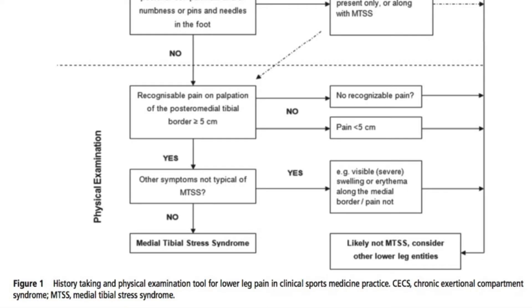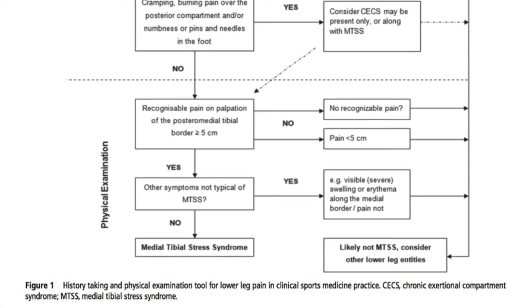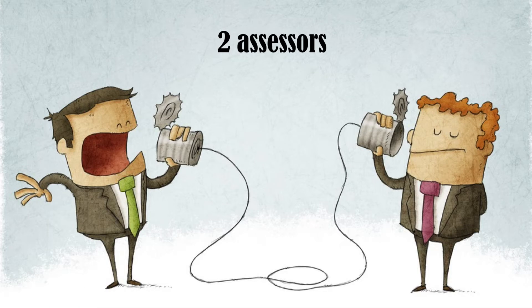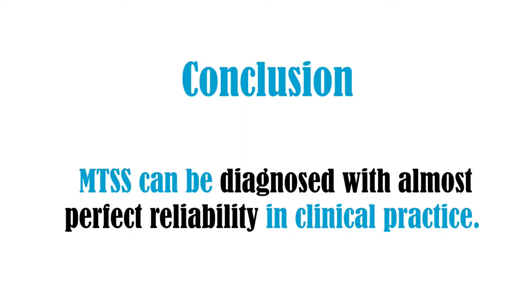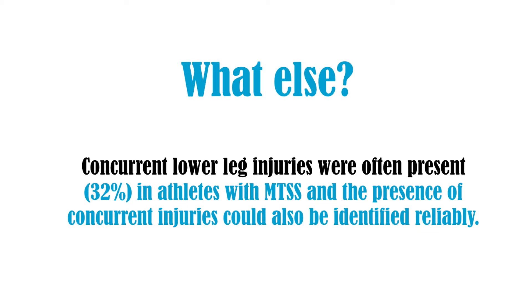Continuing through the algorithm, they checked for any other symptoms not typical of MTSS — specifically any visible or severe swelling or erythema along the medial border. If those atypical signs were present, MTSS was considered unlikely. If not, the athlete was classified as having medial tibial stress syndrome. Two independent blinded raters made the diagnoses, and they found that MTSS can be diagnosed with almost perfect reliability in clinical practice.